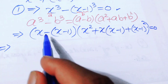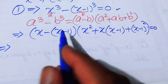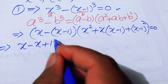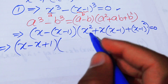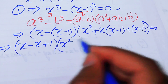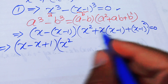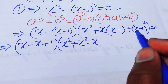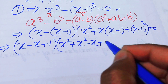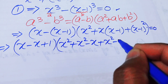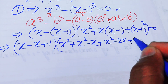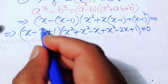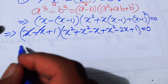Multiplying through: x minus (x−1) simplifies to 1. Expanding the bracket gives x² plus (x²−x) plus (x²−2x+1). Combining all terms yields 3x² minus 3x plus 1 equals 0.